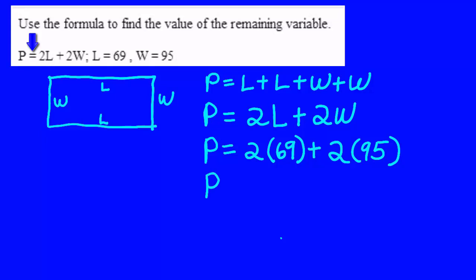So I'll have P equals 2 times 69 which is 138 plus 2 times 95 which is 190.